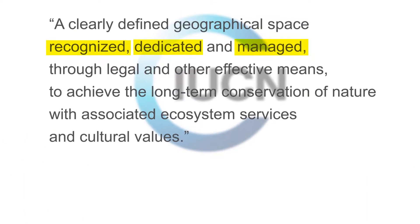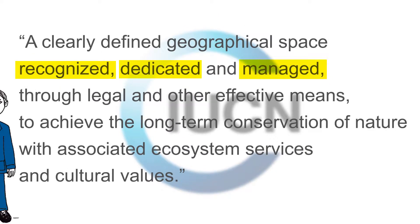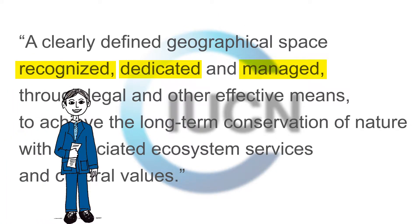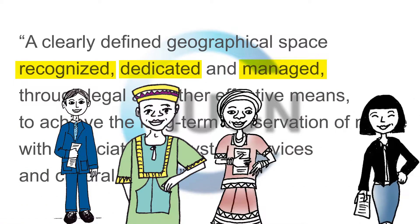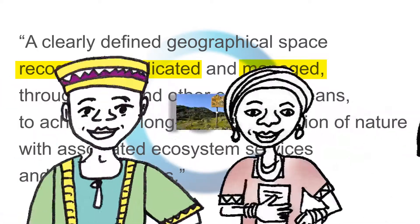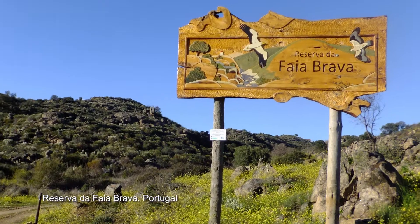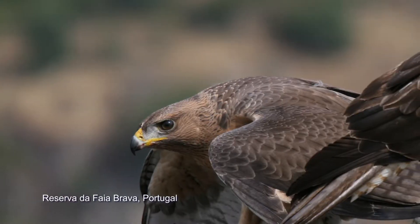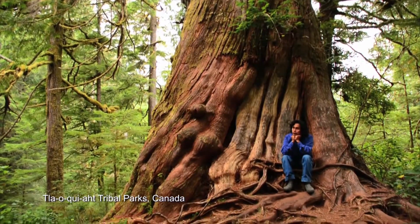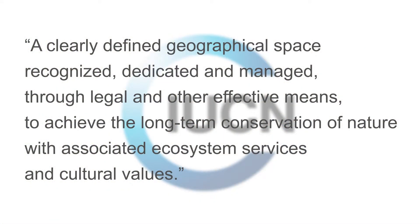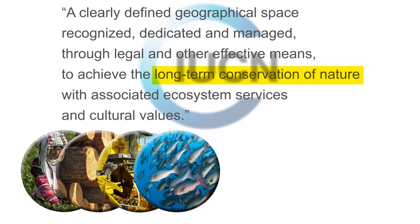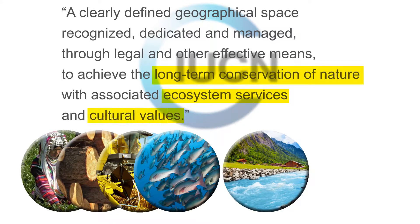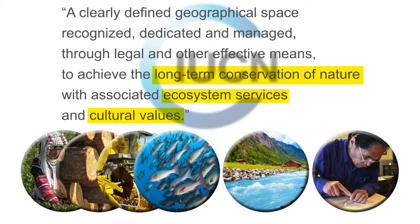Protected areas can be recognized, dedicated, and managed under formal or statutory legal systems, or other effective means such as customary law, community practice, or private procedures or rules. Many protected areas are effectively managed or governed by private organizations, indigenous groups, or local communities. The primary objective of protected areas is long-term conservation of nature. Protected areas can also support multiple resource uses, ecosystem services, and cultural values that do not interfere with the aim of nature conservation.